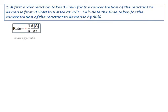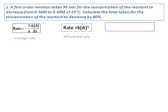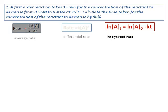We are familiar with three rate laws: the average rate law, the differential rate law, and the integrated rate law. We cannot use the average rate law because we don't have the stoichiometry value of a, and we cannot use the differential rate law because we don't know the value of k. Therefore, the only way to solve this question is using the integrated rate law.